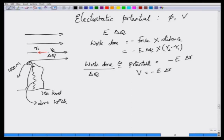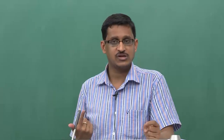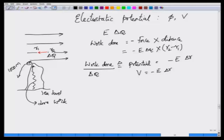Similarly, if you take the charge delta Q and move it from point R2 to R1, and then just leave the charge, it will move on its own because the force is pushing it — the charge will accelerate and gain kinetic energy. That kinetic energy comes from the potential energy gained when someone moved the object against the field. So potential is minus E times delta R. The minus sign indicates this work is done against the field.